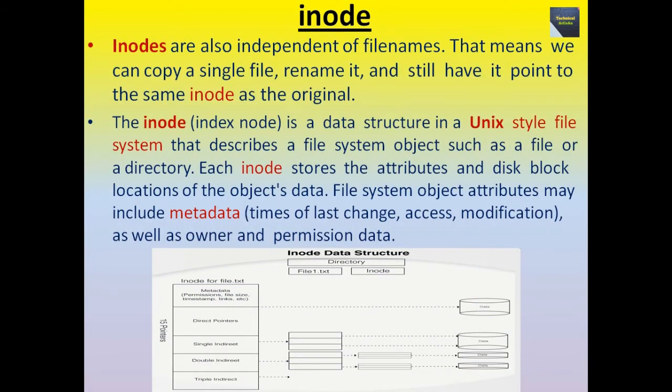Inodes are also independent of file names. That means we can copy a single file, rename it, and still have it point to the same inode as the original. The inode is a data structure in a Unix style file system that describes a file system object such as a file or a directory. Each inode stores the attributes and disk block locations of the object's data. File system object attributes may include metadata like times of last change, access, modification, as well as owner and permission data.